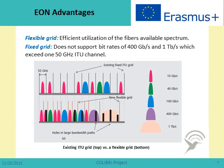In the existing ITU grid, all channels are separated by 50 GHz, so even if the need is for only 10 GHz, a full 50 GHz channel is allocated. Using the new flexible elastic concept, the allocated spectrum fits perfectly the needed bandwidth of each channel. This means we can allocate 10 GHz for a 10 Gbit/s channel, or 200 or more GHz for a super channel of 400 Gbit/s or even 1 Tbit/s. The main point in elastic optical networks is this elastic assignment of the spectrum.